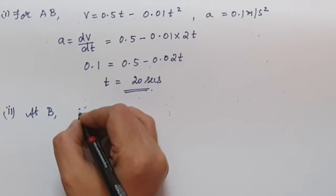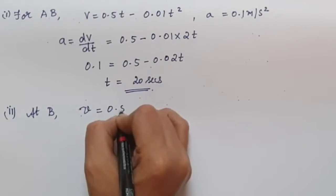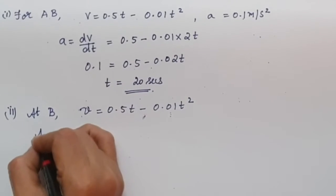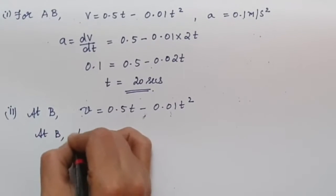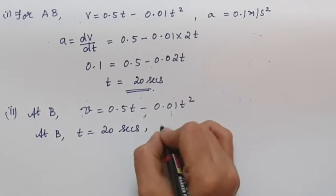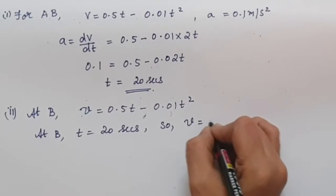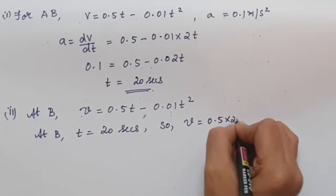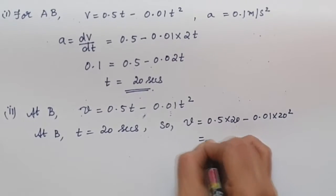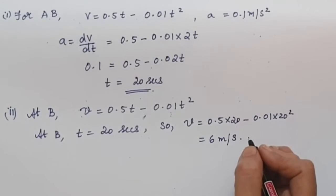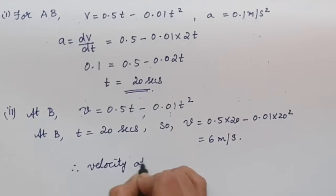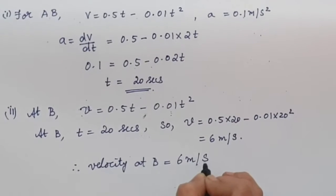Now for the second part of the question, at B the velocity V = 0.5t − 0.01t². At B, t = 20 seconds, so V = 0.5 × 20 − 0.01 × 20² = 6 meters per second. Therefore, velocity at B equals 6 m/s.